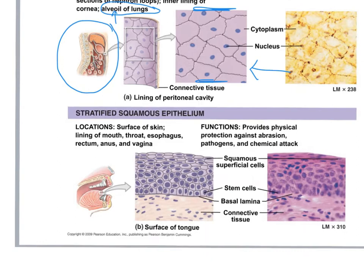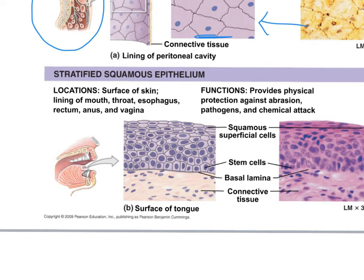Stratified squamous epithelium is thicker — it has many layers. Any stratified epithelium's job is protection, so we find it in areas where there's a lot of friction against that epithelium and it needs to protect the underlying body. Stratified squamous can be found on the skin, which has many layers of squamous cells.